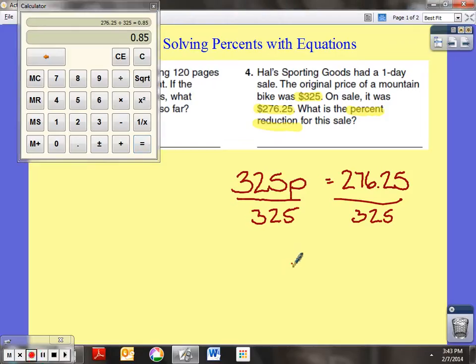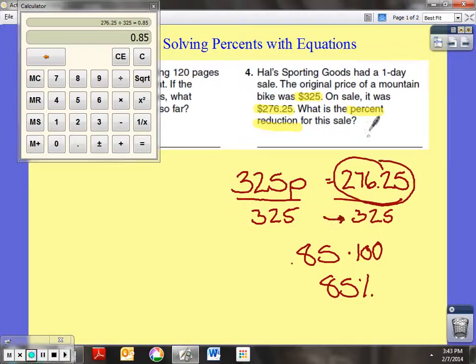Now we're getting an answer of 85 hundredths, which we know to times by 100 to get percent. Now does that mean the price was reduced by 85%? No, that's what percent we're paying. We're paying 85% of the original price. So the reduction is the difference between the 100% that the original price is and the 85% that we're paying. So that'll give me 15, so it's a 15% reduction.